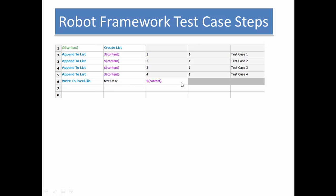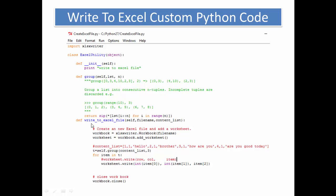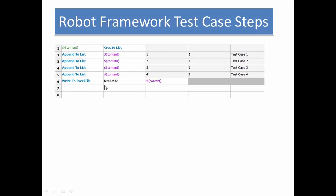Let's go back to the Python file and verify this is correct. Looking at the Python file, define write_to_excel_file takes three variables: self, which represents the ExcelUtility object — already imported as a library so we don't need to pass it — plus file_name and content_list. In this keyword, we give file name test3.xlsx and content. So this syntax is correct.